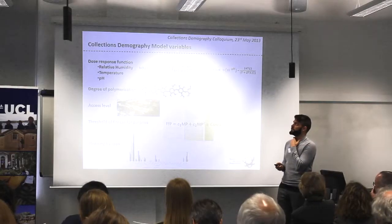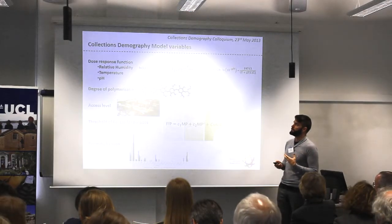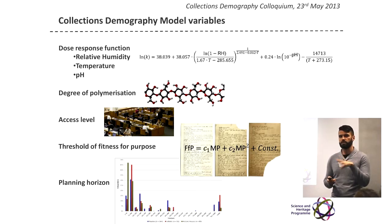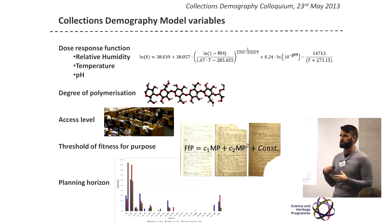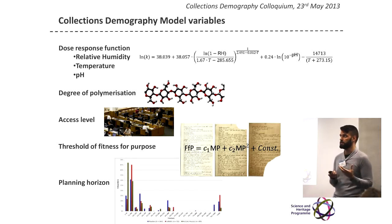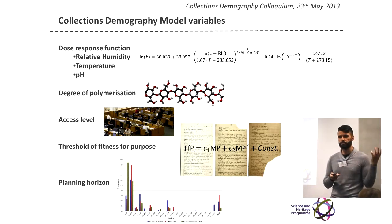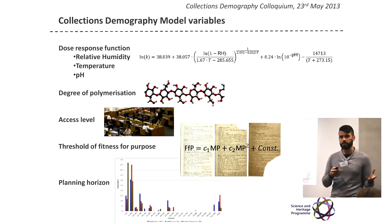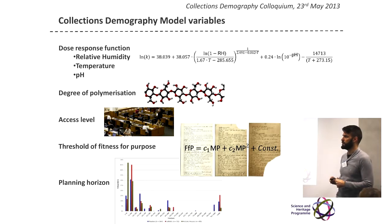To summarize: the variables that go into the model include the dose response function, and that answers some of your questions about whether the model can be applied to other materials — yes, it can be, if you change the dose response function. So if you develop a damage function, a dose response function for plastics, photographs, or iron, you could change that into the model and take a different approach to different materials. The degree of depolymerization was how we determine the end of the fitness-for-purpose threshold, but again that could be changed. Access level could come from statistical data of a particular collection, or be determined by you — though in the case of the National Archives, limiting access would defeat the purpose of the archive, which is to give access to the records.